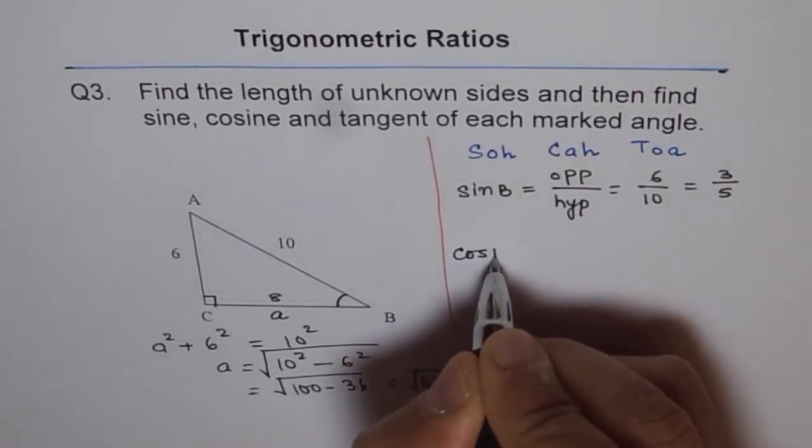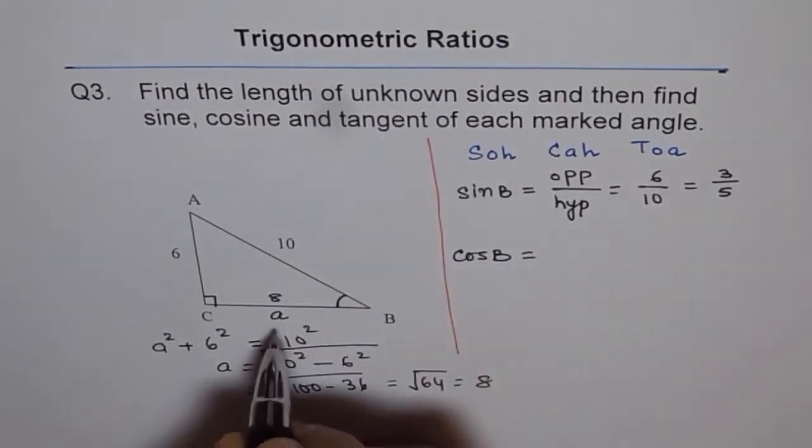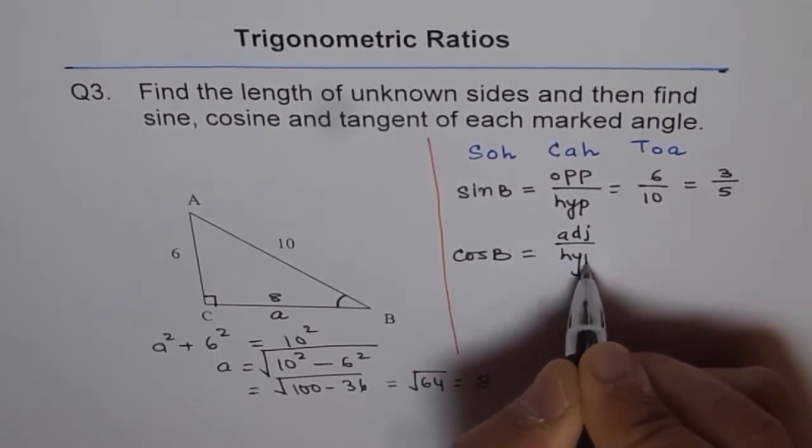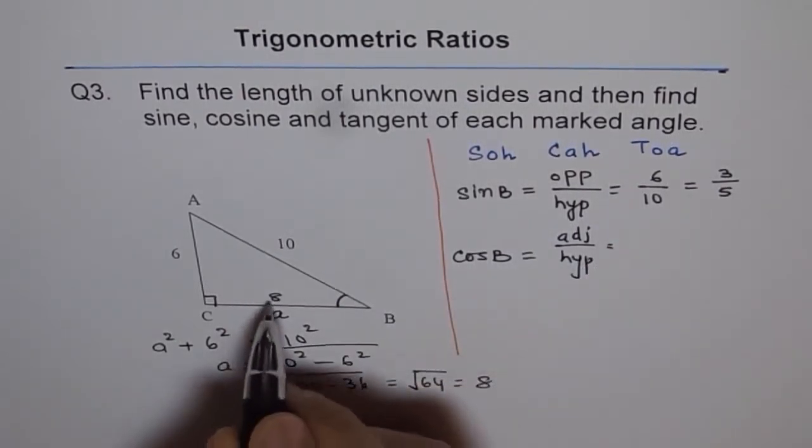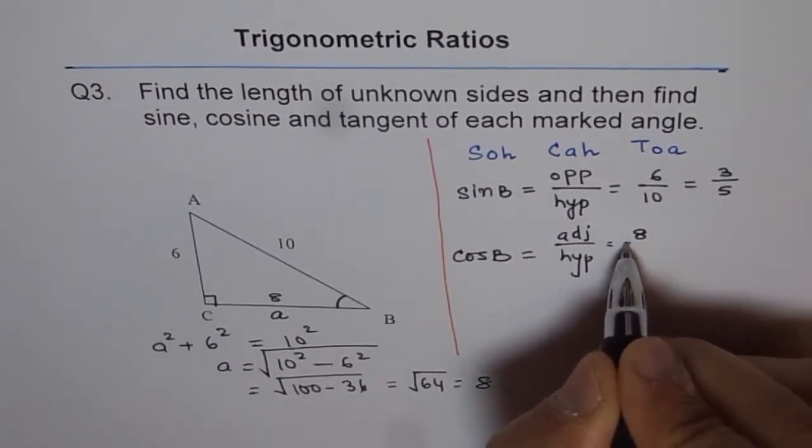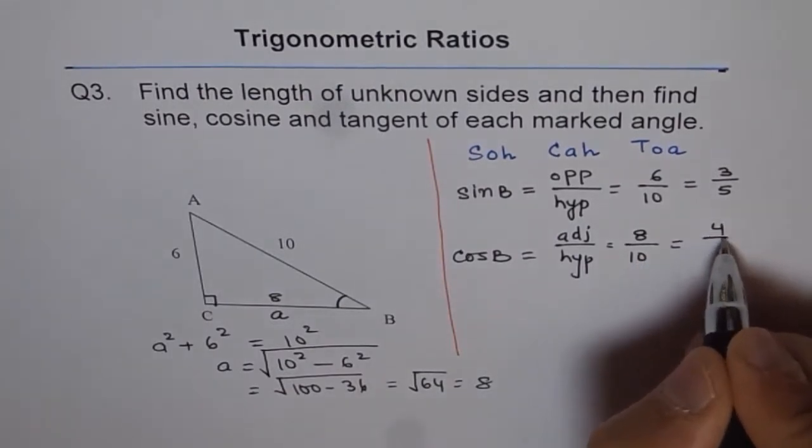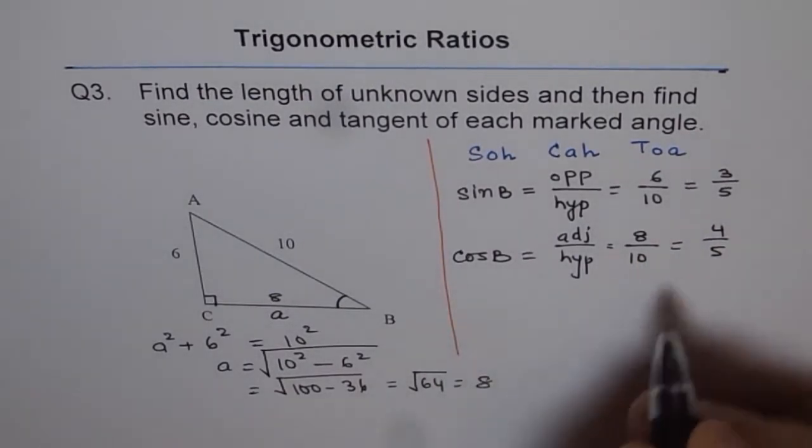Now what is cos B? Cos B is adjacent side over hypotenuse. The adjacent is 8, which we just calculated, over hypotenuse 10. We can divide them by 2 and get 4 over 5 as cosine B.